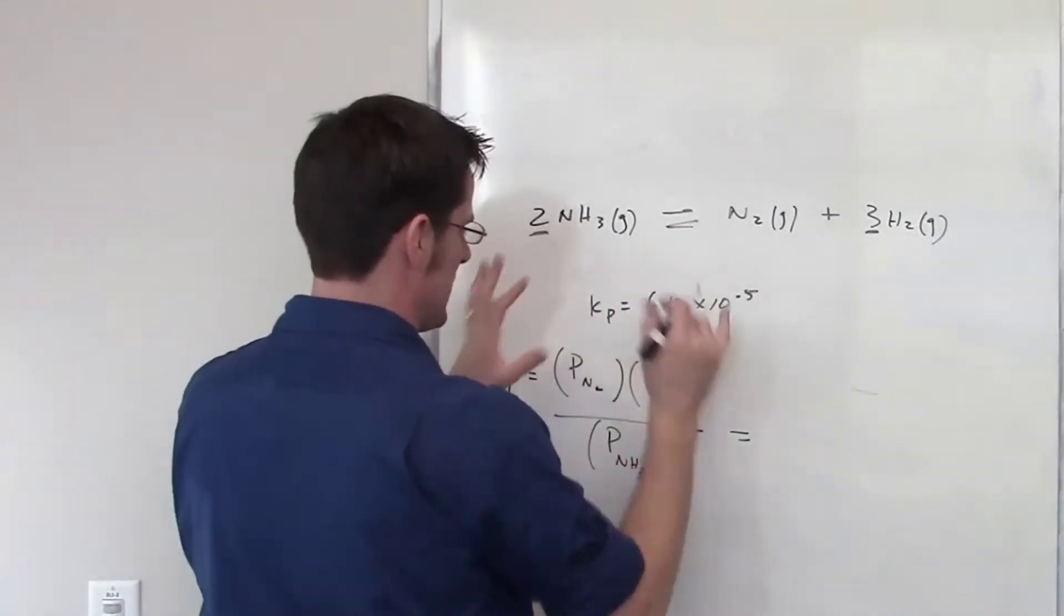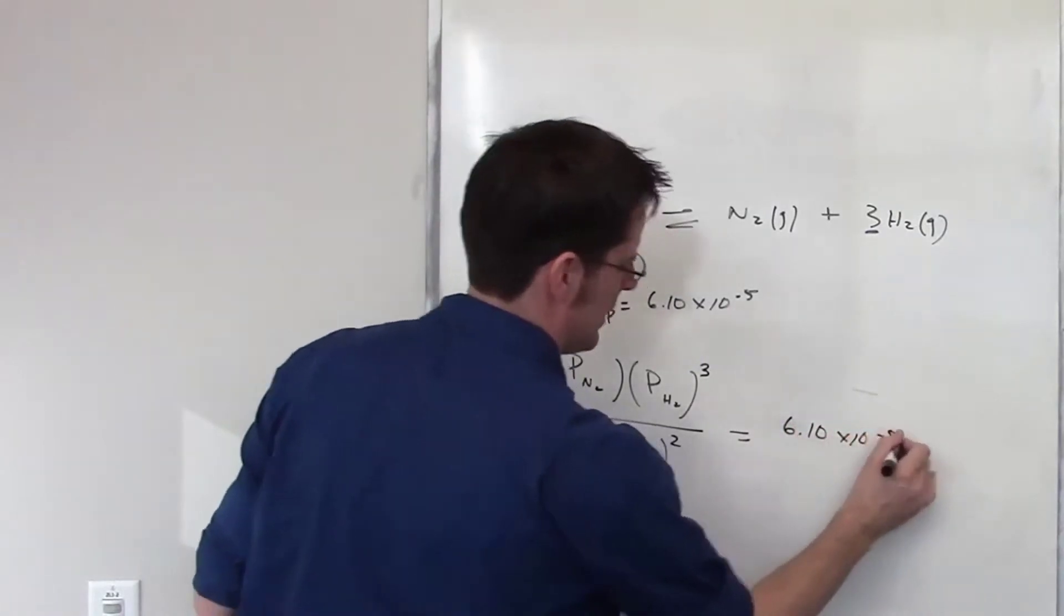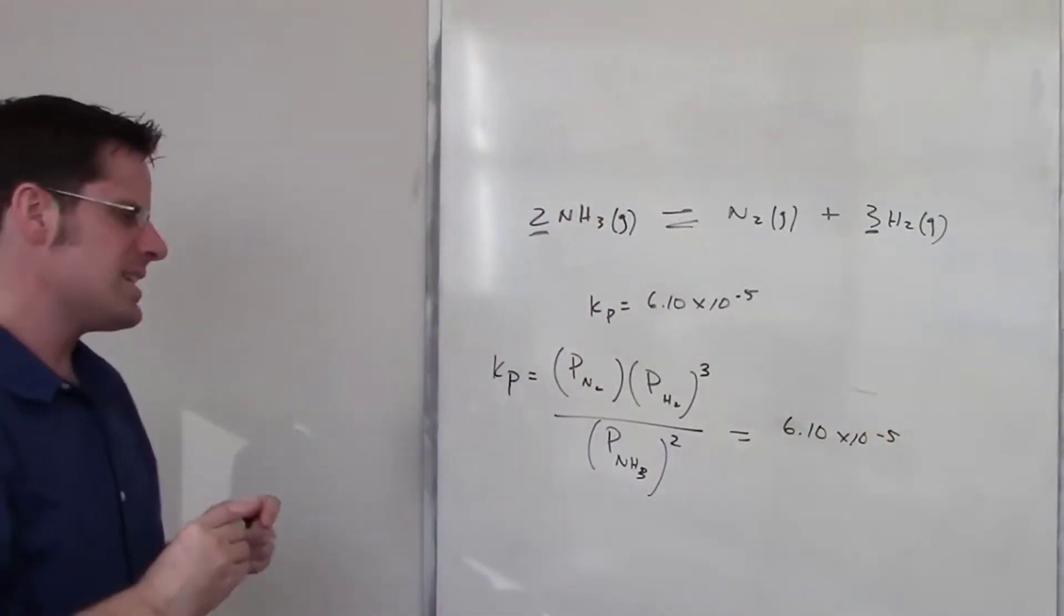That 2 becomes an exponent there as well. This, for this system at equilibrium, this temperature is equal to 6.1 times 10 to the negative 5th. Look at that number. What does that number tell us?